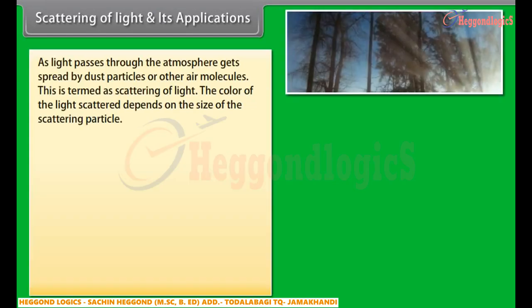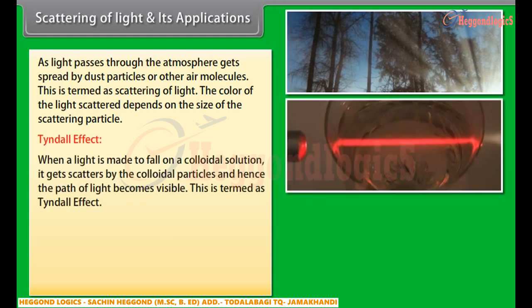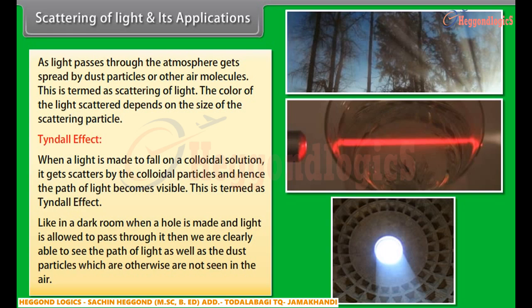Scattering of light and its applications: as light passes through the atmosphere, it gets spread by dust particles or other air molecules. This is termed as scattering of light. The color of light scattered depends on the size of the scattering particle. Tyndall effect — when light is made to fall on a colloidal solution, it gets scattered by the colloidal particles and the path of light becomes visible. For example, in a dark room when a hole is made and light is allowed to pass through it, we are clearly able to see the path of light as well as the dust particles.